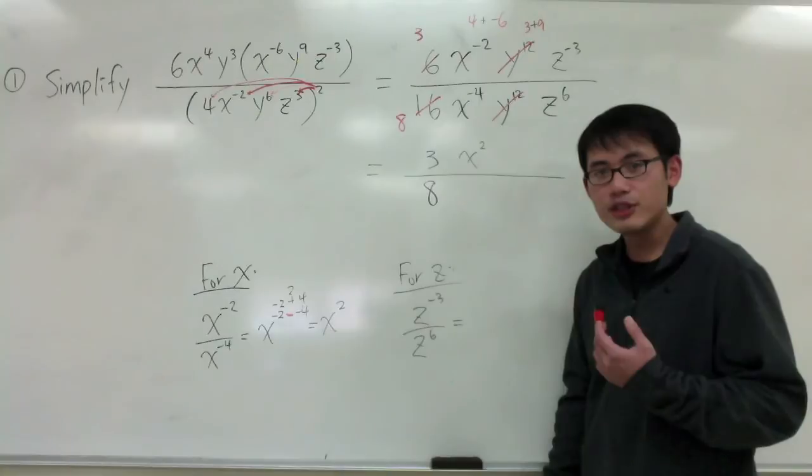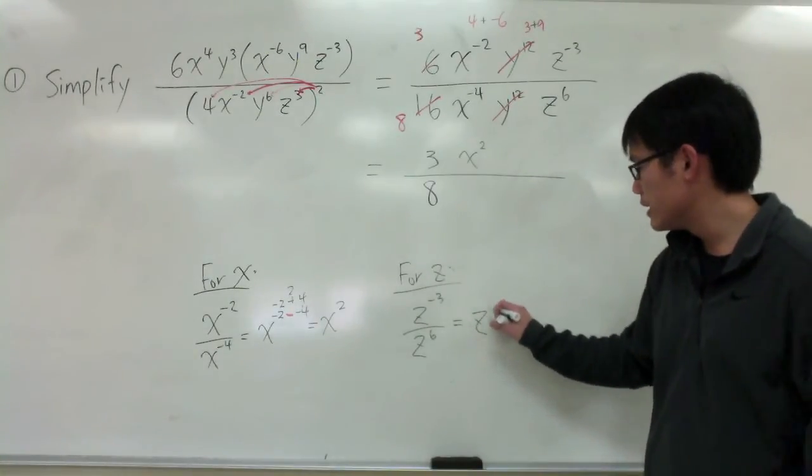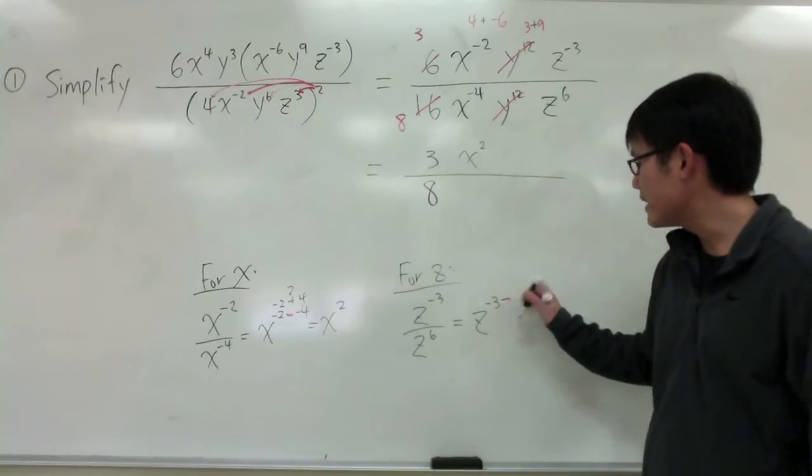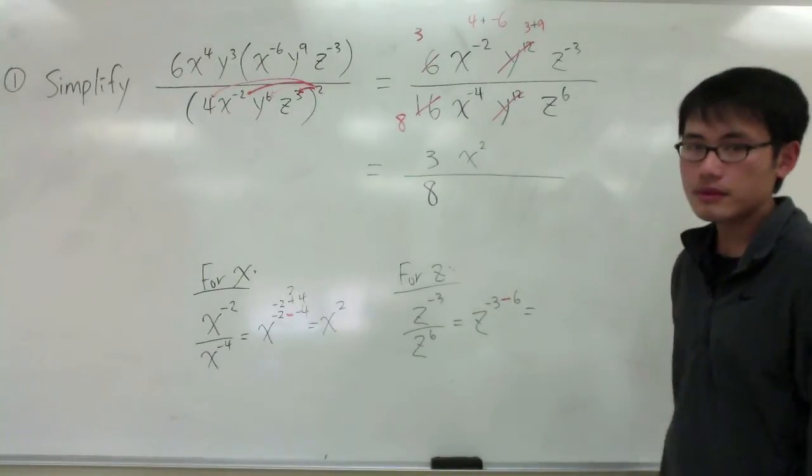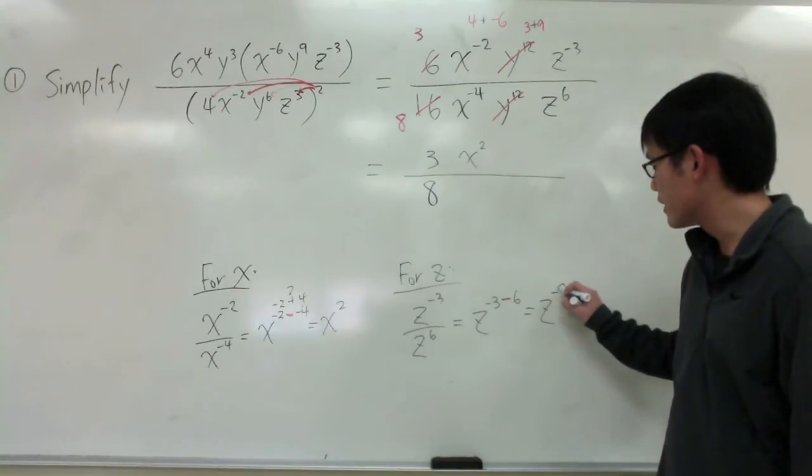Once again, I just need to take the top exponent minus the bottom exponent, z to the negative 3, minus 6. Negative 3 minus 6 will get z to the negative 9.